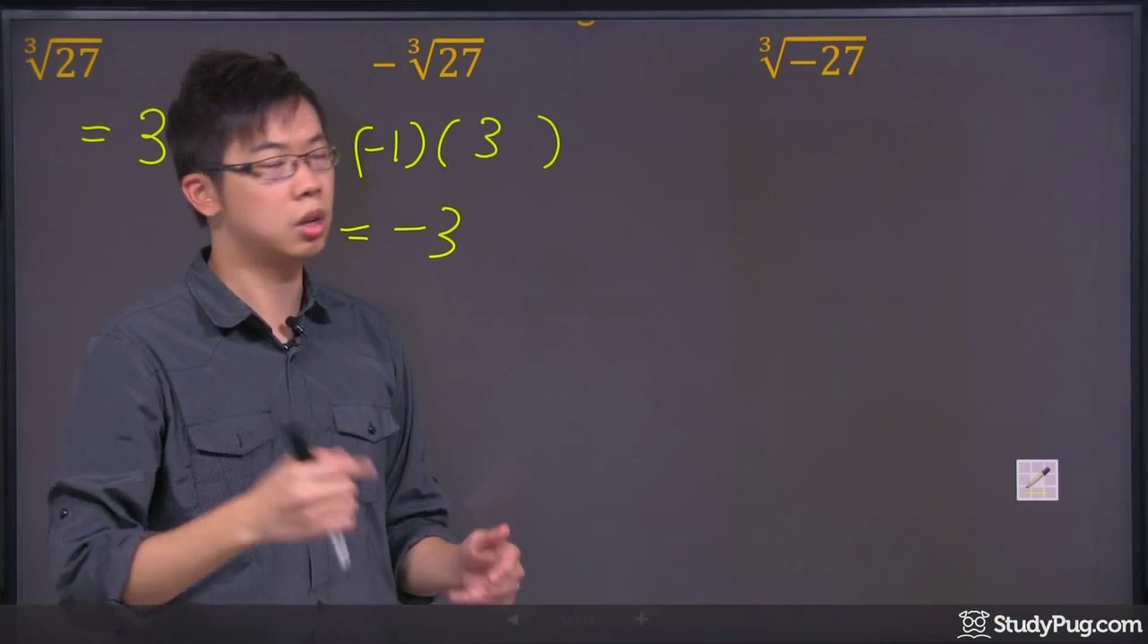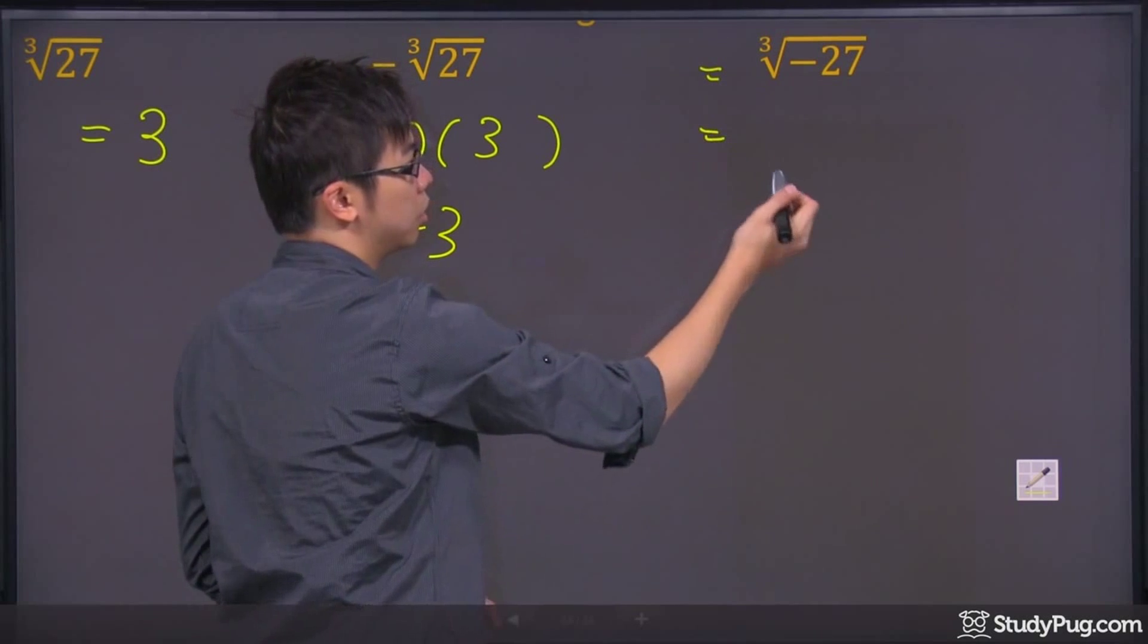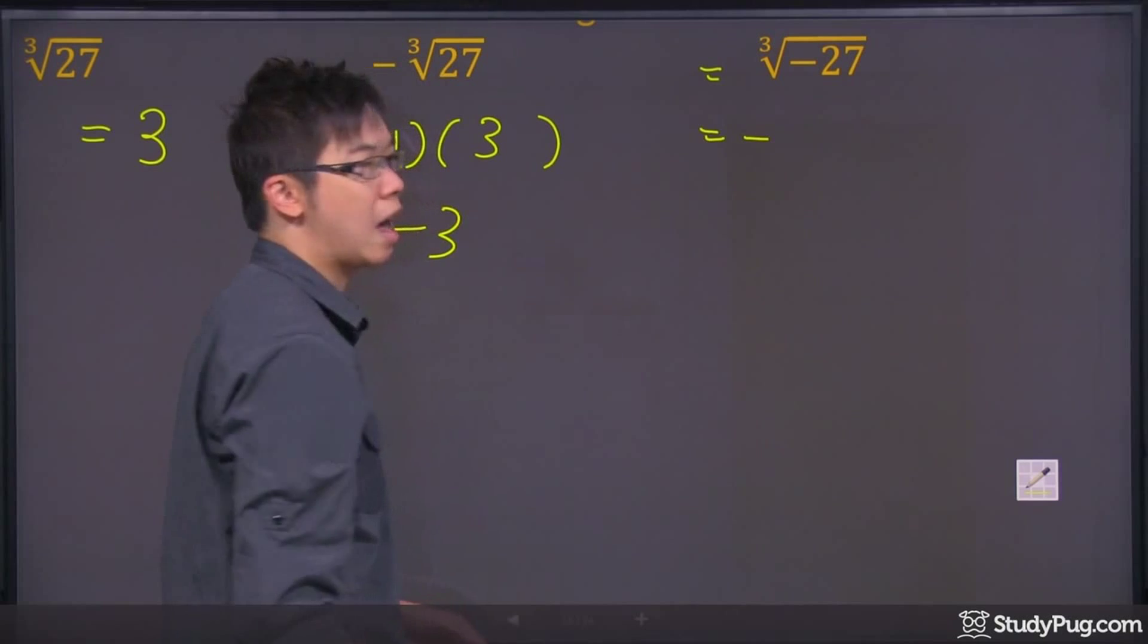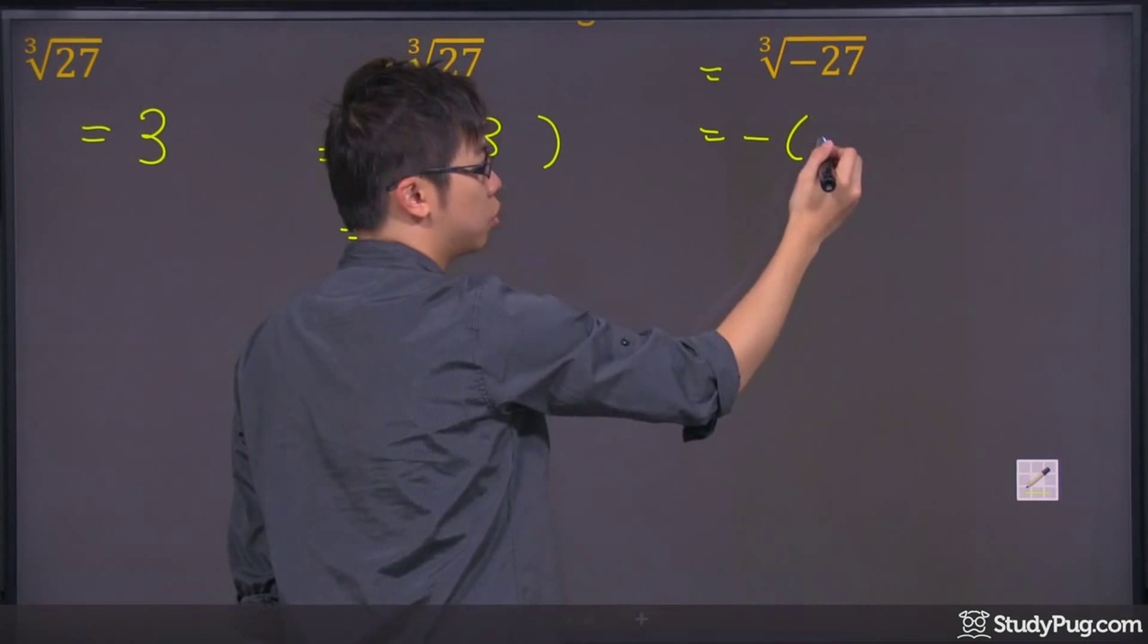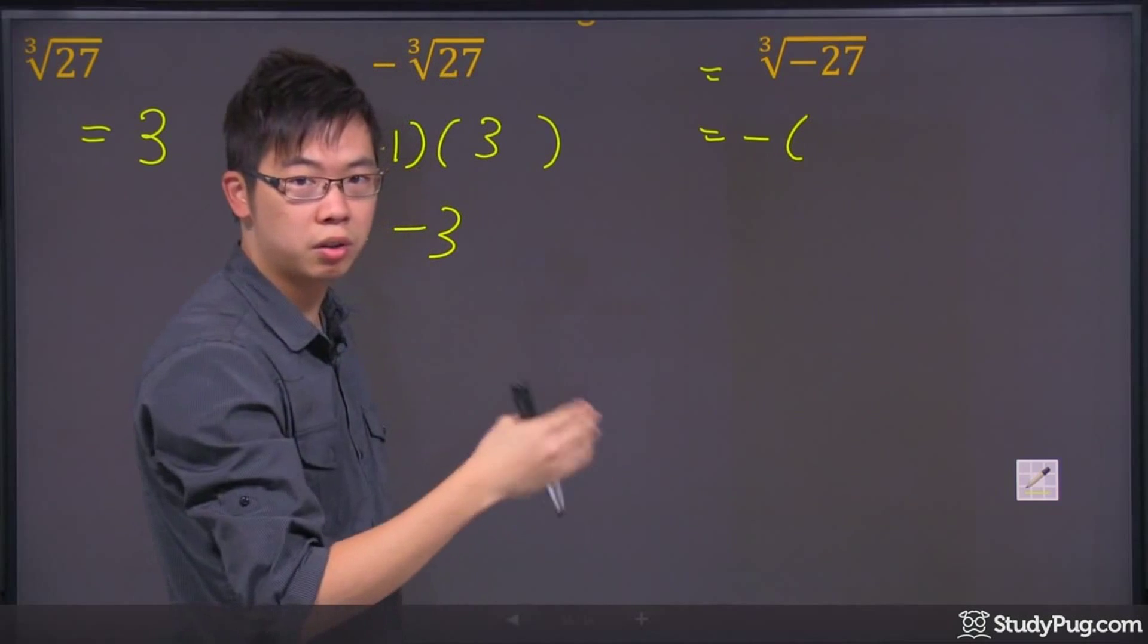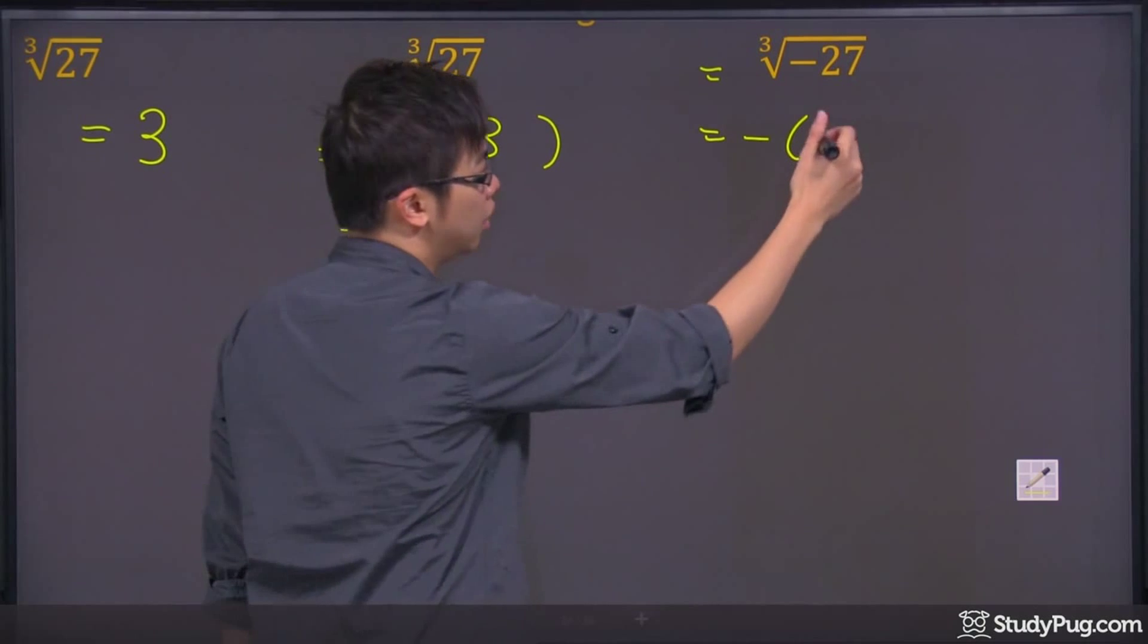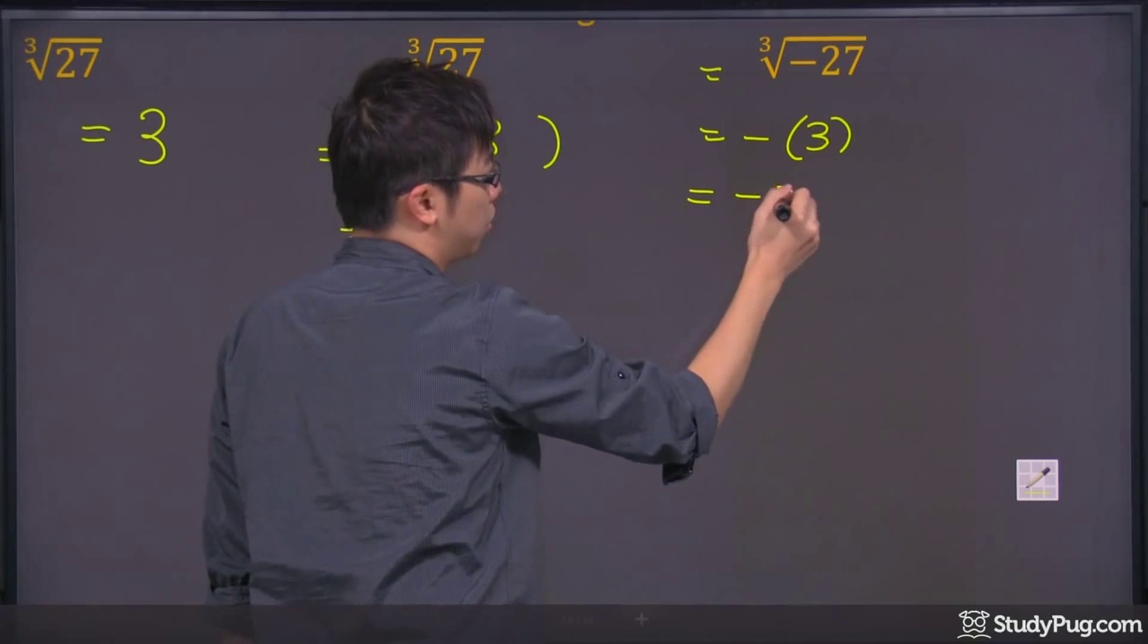So if you're doing a cube root, the negative just comes out from the radical sign, and you still go ahead and figure out the 27 separately from the negative sign. It's a little shortcut, so you still get a 3. So the answer is just a negative 3.